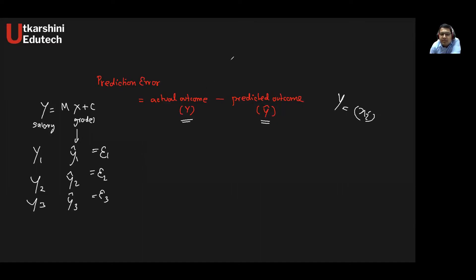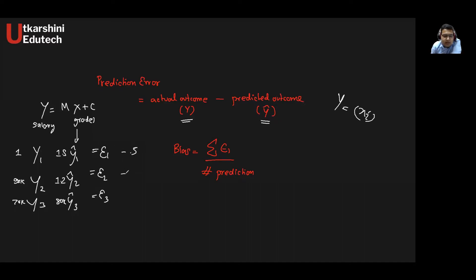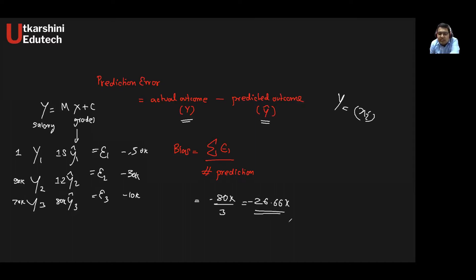There is a concept called bias, which is the sum of all errors divided by the total number of predictions. For example, if my model predicted 1.5 lakh, 1.2 lakh, and 80k, while the actual values were 1 lakh, 90k, and 70k, the errors are minus 50k, plus 30k, and plus 10k. The overall error sum is minus 80k divided by 3, giving approximately minus 26.66.